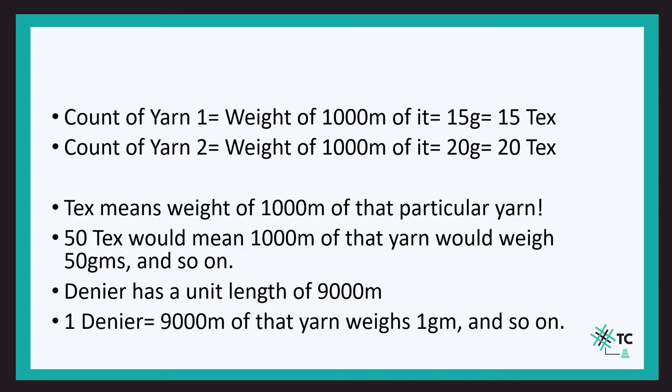As the value of count increases in the direct system, that means the yarn is getting coarser. So yarn 3 is coarser than yarn 2, and yarn 2 is coarser than yarn 1 — or we can say yarn 1 is finer than yarn 2, and yarn 2 is finer than yarn 3.